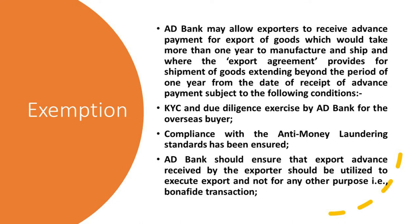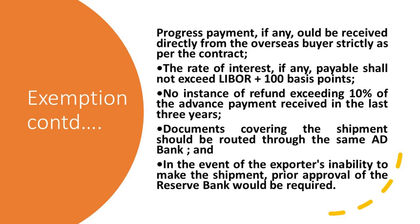Progress payments, if any, should be received directly from the overseas buyer strictly as per the contract. The rate of interest, if any, payable shall not exceed LIBOR plus 100 basis points. There should be no instances of refunds exceeding 10% of the advance payment received in the last three years. Documents covering the shipment should be routed through the same AD bank, and in the event of the exporter's inability to make the shipment, prior approval from the Reserve Bank would have to be obtained.